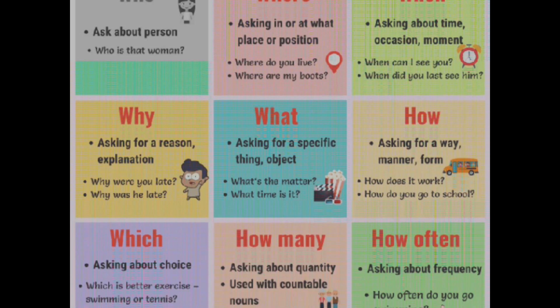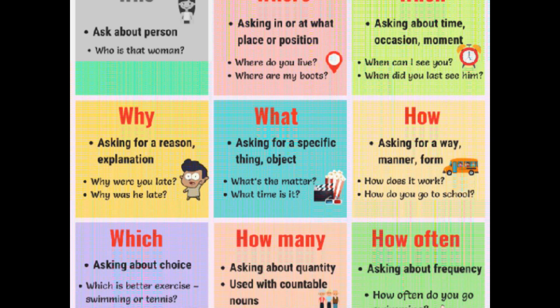Here are the question words with description. The first word is WHO. Who is used to ask about a person. Where is used to ask about place or position. And when is used to ask about time, occasion, or movement.